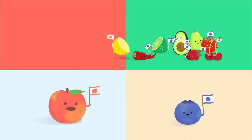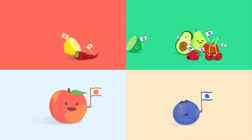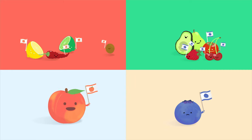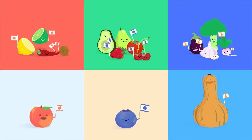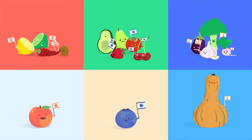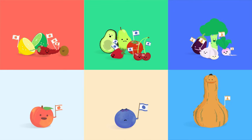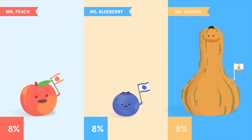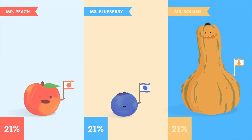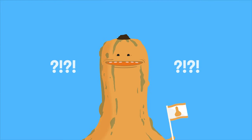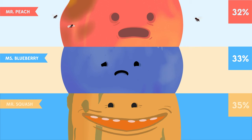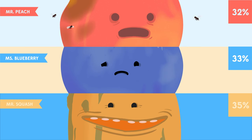Mr. Peach sweet-talks almost half of Blueberry's supporters into switching their vote to him, while Mr. Squash holds the same 35% he had last time. The votes are counted. And what's this? Mr. Squash wins? Blueberry and Peach have split the fruit vote. How did this happen?